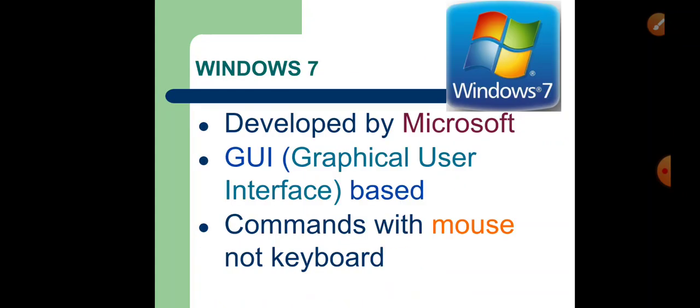Let us learn more about Windows 7. It is an operating system developed by Microsoft and it is GUI-based, that means Graphical User Interface-based operating system, and the commands are performed with the help of a mouse instead of a keyboard.